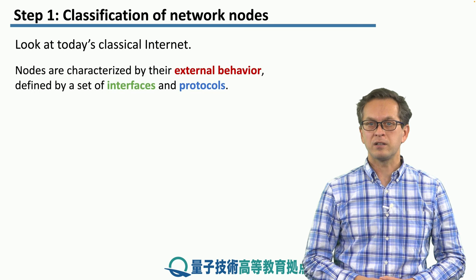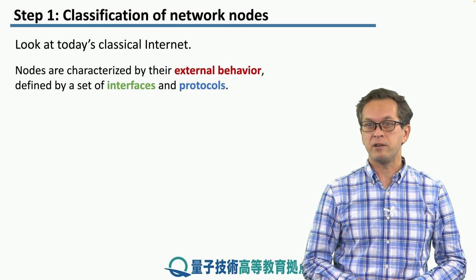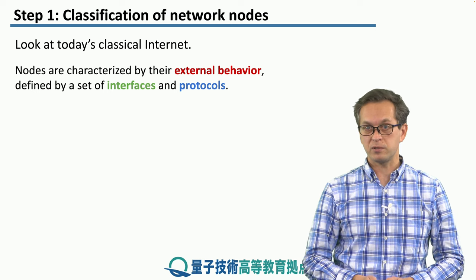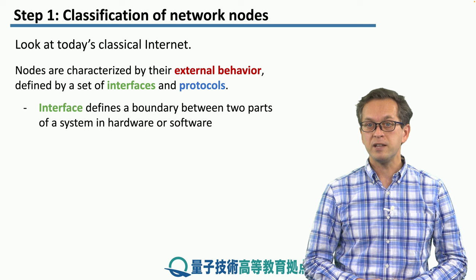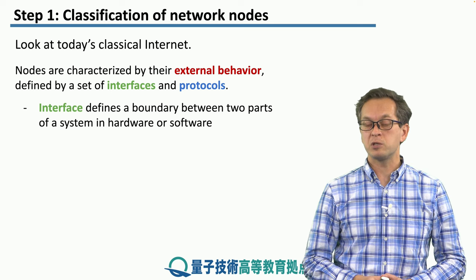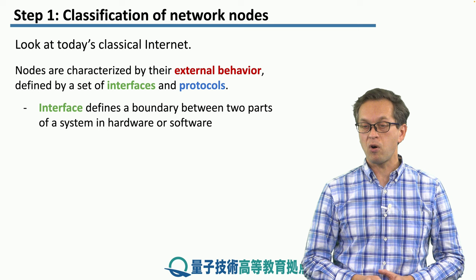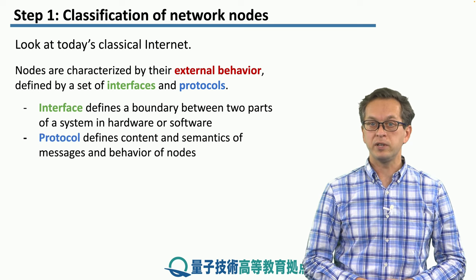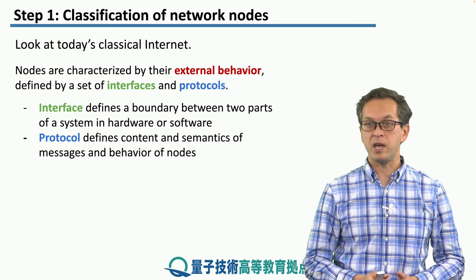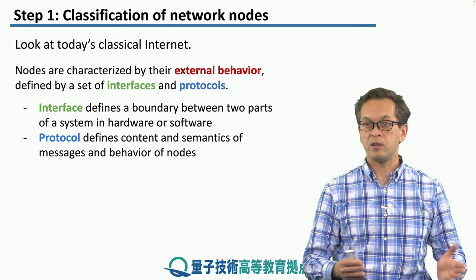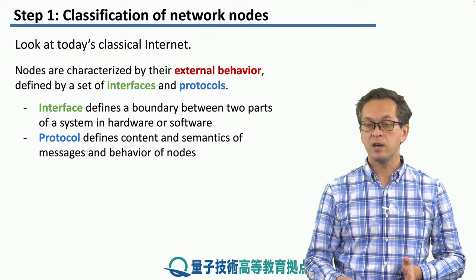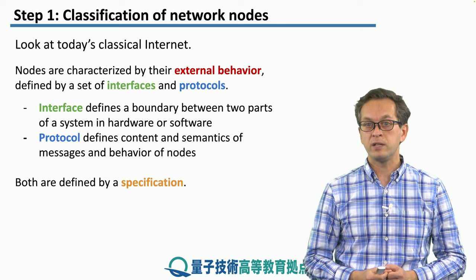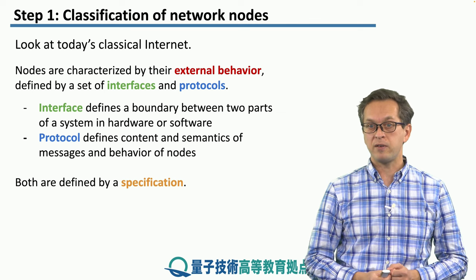Let's look at how nodes are characterized. They're characterized by their external behavior, which is defined by a set of interfaces and protocols. An interface defines a boundary between two parts of a system — this could be a hardware or a software boundary. The protocol defines content and semantics of messages and behavior of nodes. Every time different nodes need to communicate, a strict set of rules must be followed. Both interfaces and protocols are defined by a specification.